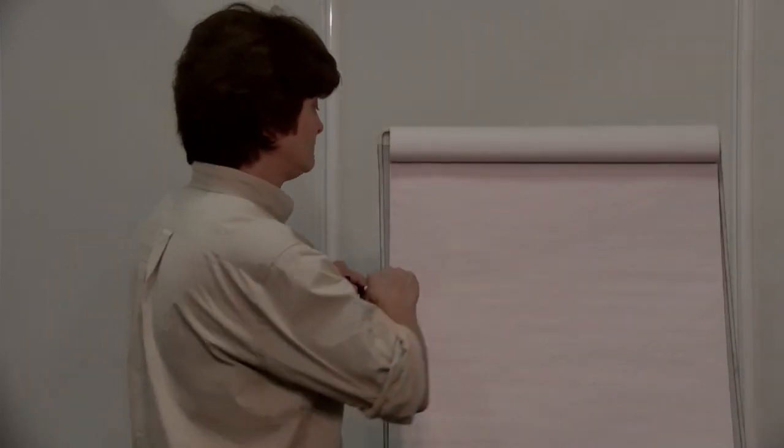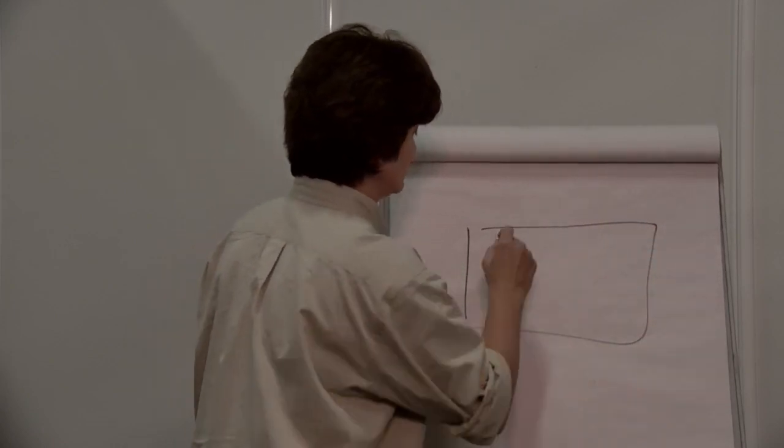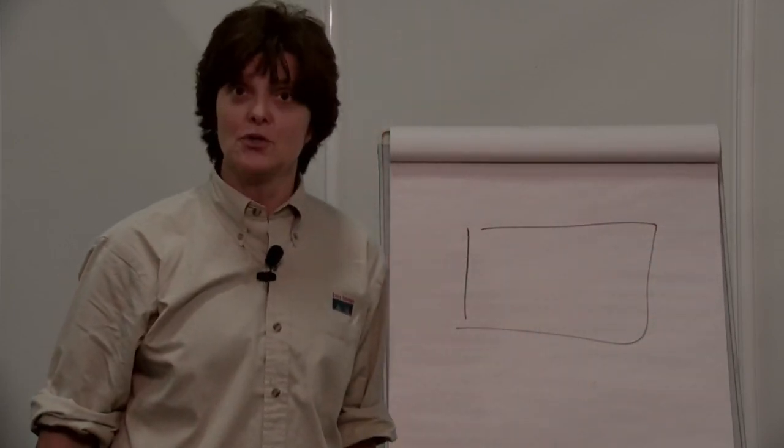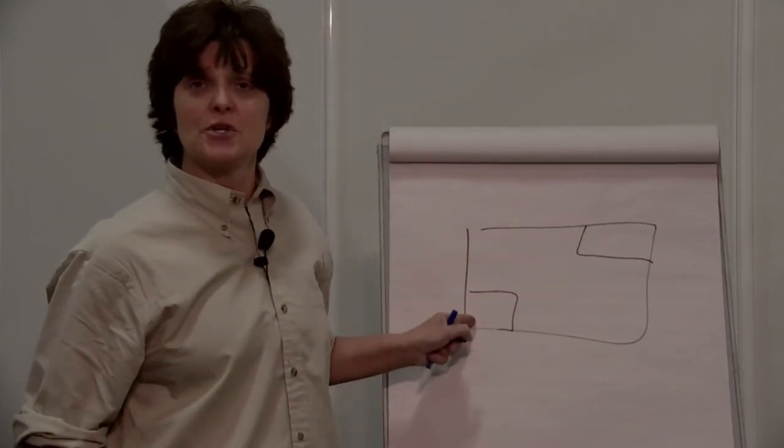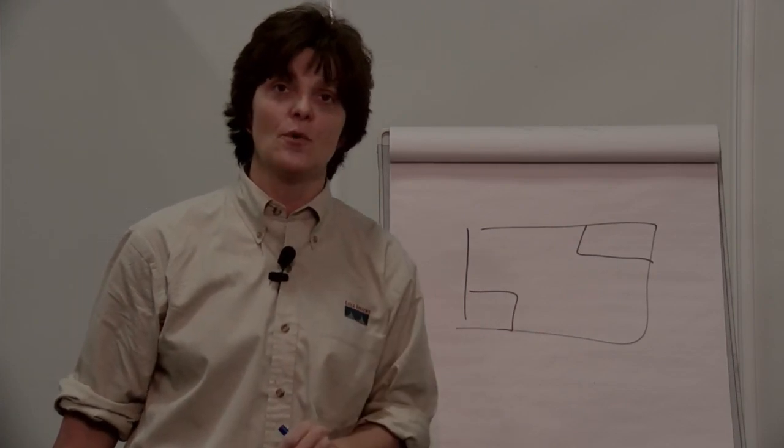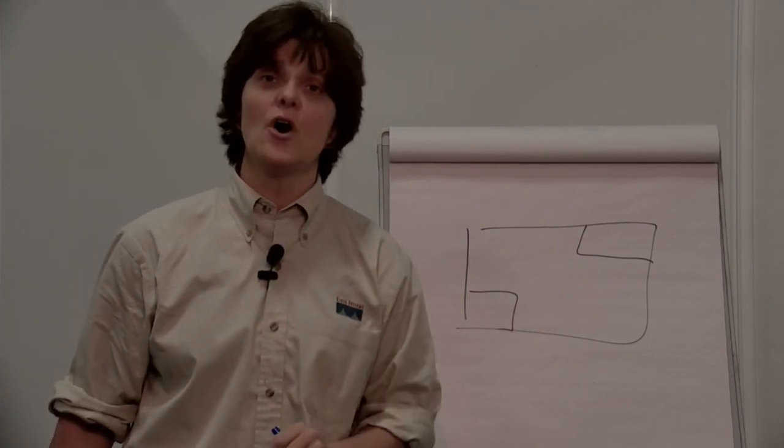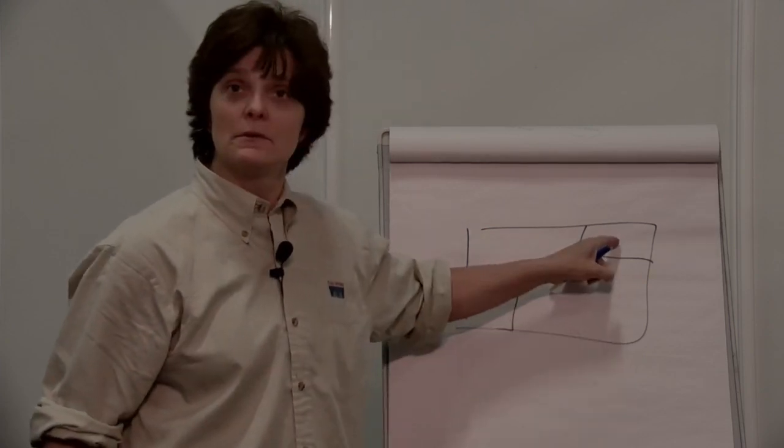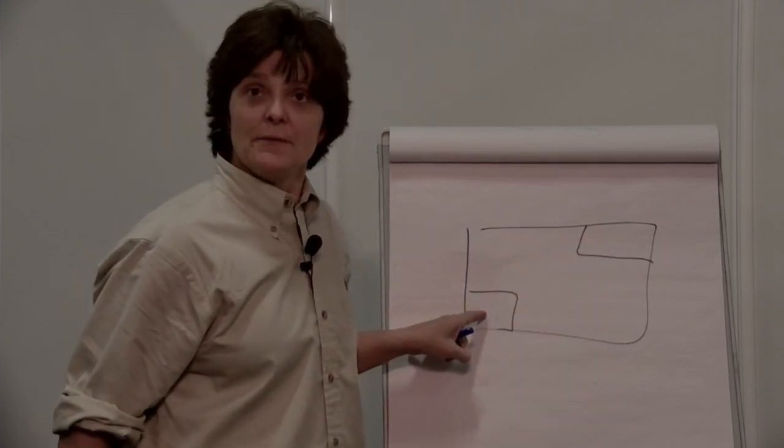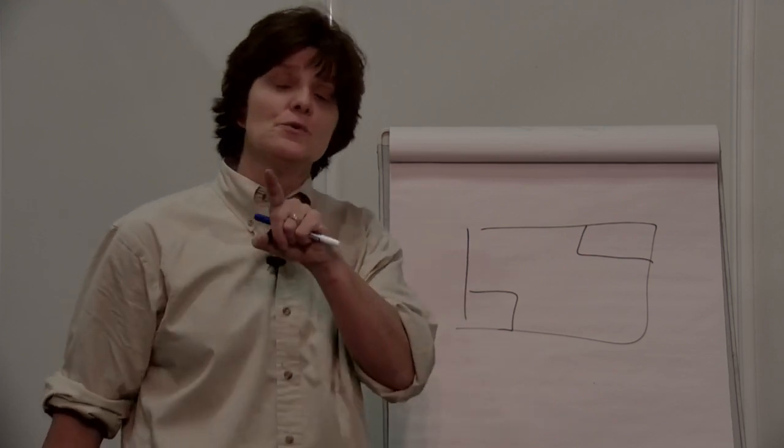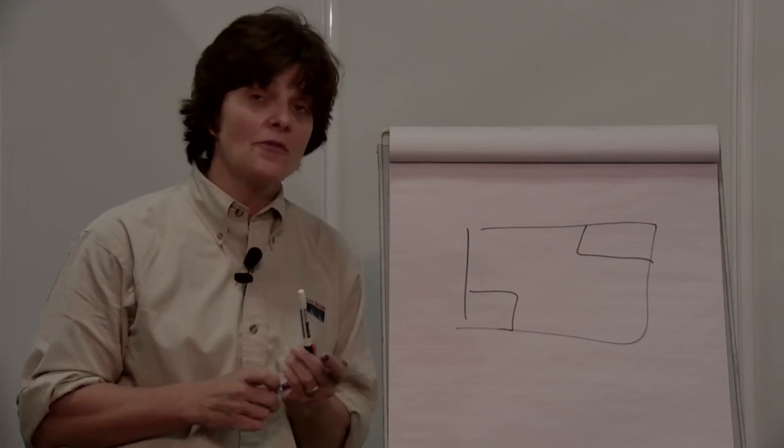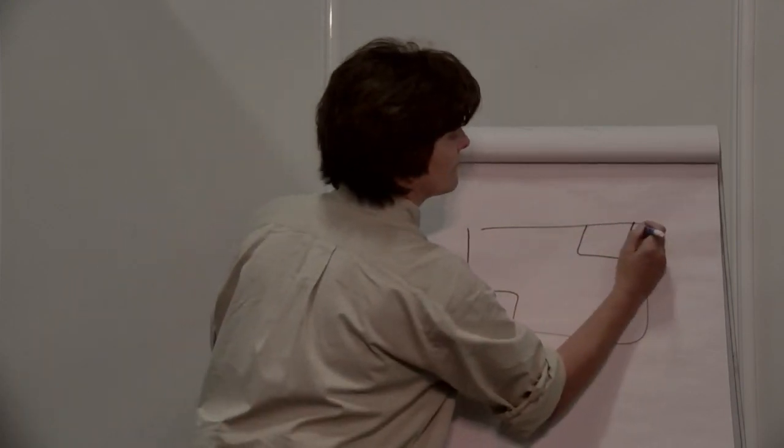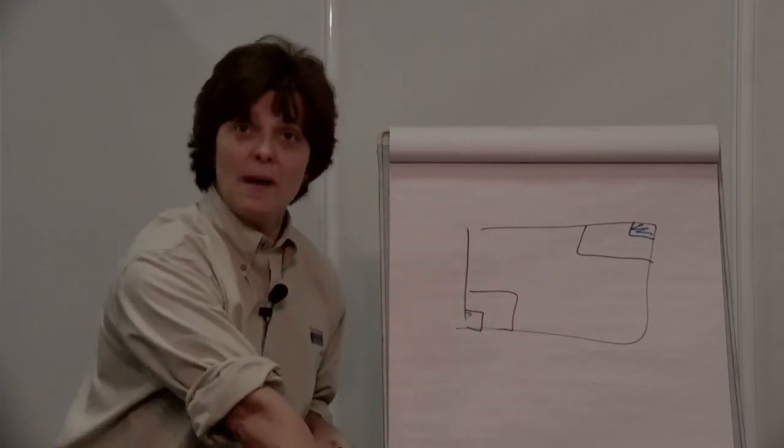You've got the game of Clue. You have somebody up here, this is the lounge and this is the conservatory. Nobody saw that person in the hallway. Your primary suspect was here. The murder occurred over here. For those who know Clue, what is missing on this diagram? What's missing is the secret underground passage that gets you from this room to this room.